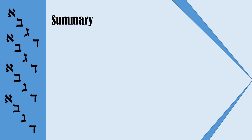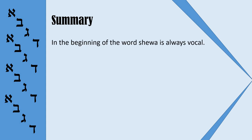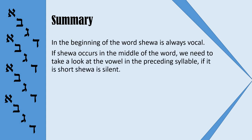Now let us summarize everything we learned in this short video. At the beginning of the word, Sheva is always vocal. If Sheva occurs in the middle of the word, we need to look at the vowel in the preceding syllable — if it is short, then Sheva is silent. And at the end of the word, Sheva is always silent.